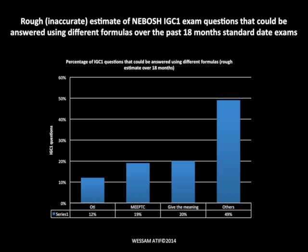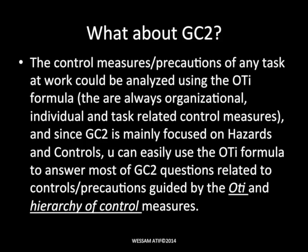What about IGC2, now called GC2? GC2 is mainly about hazards and controls. You can use the OTI formula to answer hazards and controls questions because control measures for any work task can be analyzed under organizational, individual, and task-related controls. Since GC2 is mainly focused on hazards and controls, you can use the OTI formula to answer most GC2 questions related to controls and precautions.